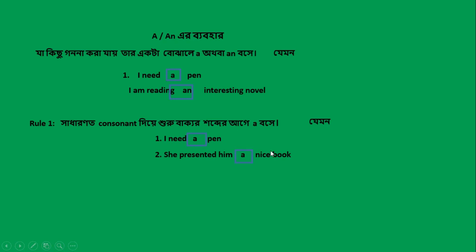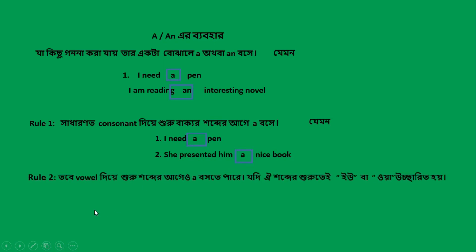নাইসের প্রথম অক্ষর 'n' হলো কনসোনেন্ট, তাই 'a' বসে। কিন্তু দুই নম্বর নিয়মে বলা হচ্ছে — তাবে ভুল দিয়ে শুরু শব্দে,